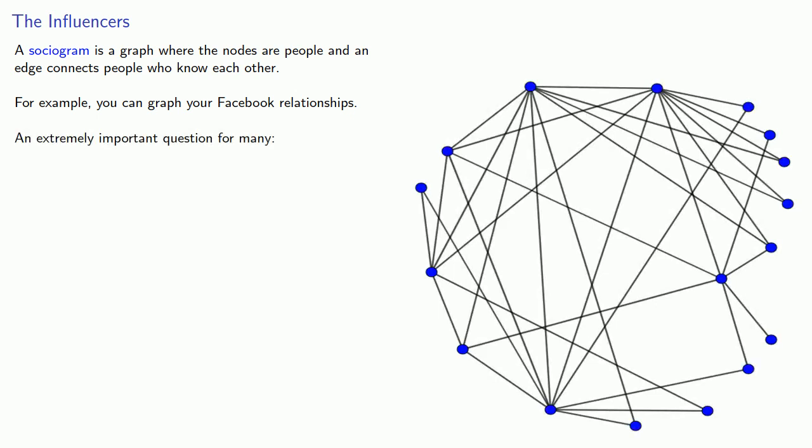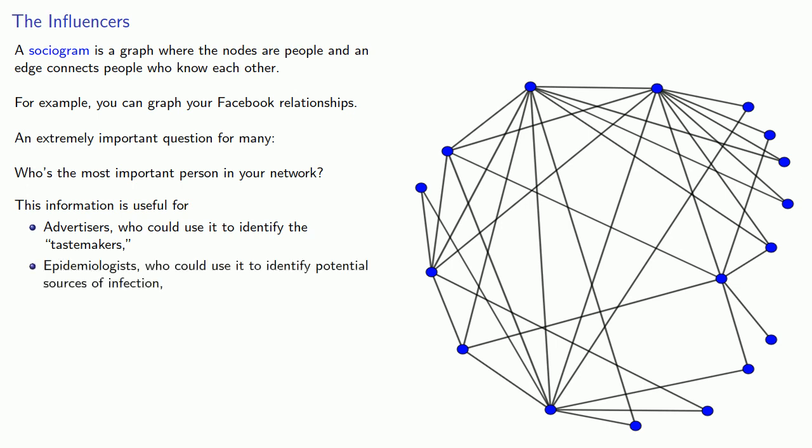An extremely important question for many: who's the most important person in your network? This information is useful for advertisers who could use it to identify the tastemakers, epidemiologists who could use it to identify potential sources of infection, and law enforcement who could use it to disrupt a criminal network, and many others.